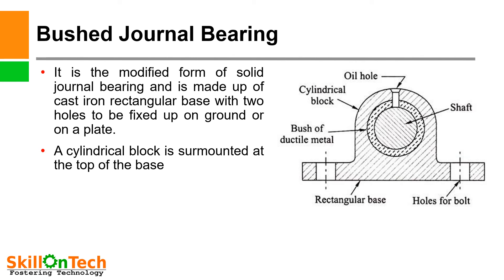The bushed general bearing features a bush of ductile metal fixed in the pedestal frame, with a shaft running inside. It is a modified form of solid journal bearing, made up of a cast iron rectangular base with two holes for fixing on the ground or on a plate. A cylindrical block is mounted at the top of the base.